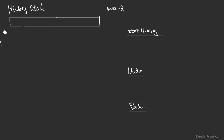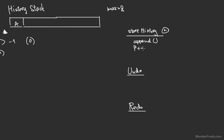When we start our application, the pointer is going to have a value outside of the history stack, so let's say minus one, and the length of the list is going to be zero. When we store history, we basically append the item to the list — that's item A — and we increase the pointer, so the pointer will be pointing at zero and the length of the list is going to be one.